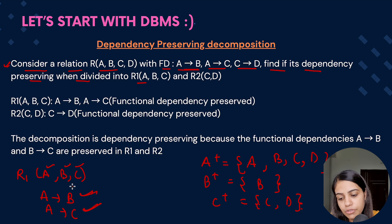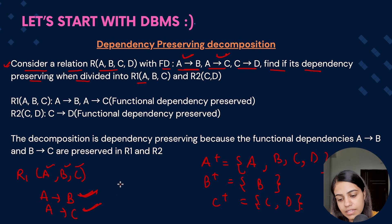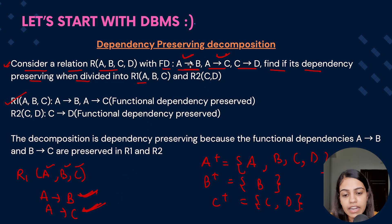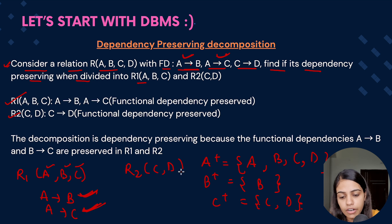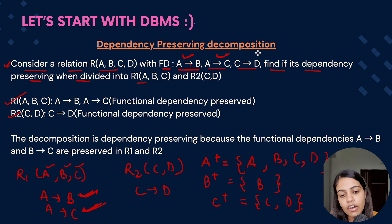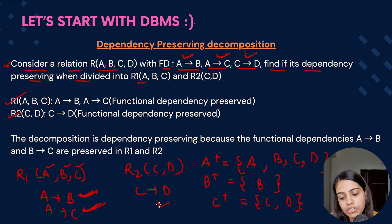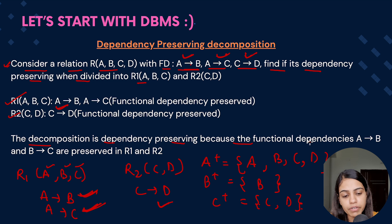So the functional dependencies for R1 are A→B and A→C. Comparing with the original dependencies: A→B is preserved and A→C is also preserved in R1. Coming to R2, which has attributes C and D. C can determine C and C can determine D, giving us one non-trivial dependency: C→D. Since C→D was present before the decomposition and is also present after, it is preserved. So the decomposition is dependency preserving.